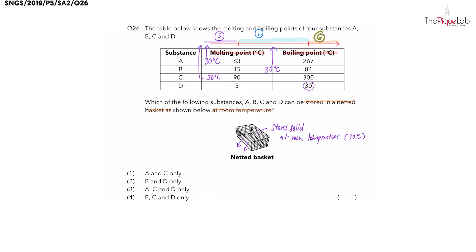Remember what is happening at the boiling point — liquid is actually changing to gas. So at 30 degrees Celsius, it is possible to find D in both liquid state and gas state as the liquid is boiling to form gas. The question was looking for only solids at 30°C. We have two substances which are solid: substance A and substance C, giving us the answer as option number one.